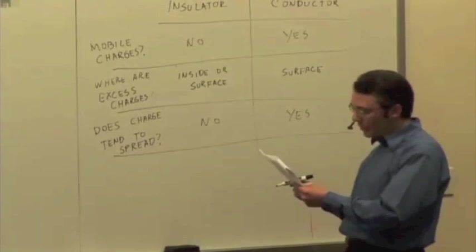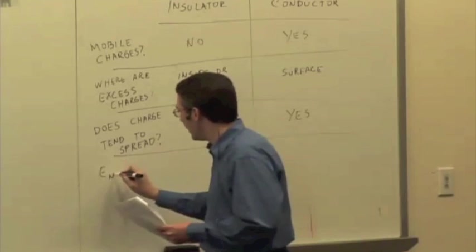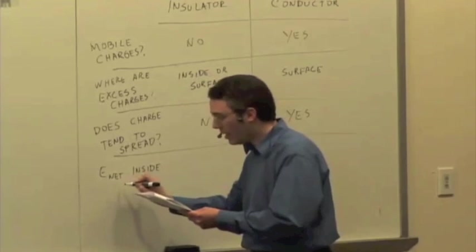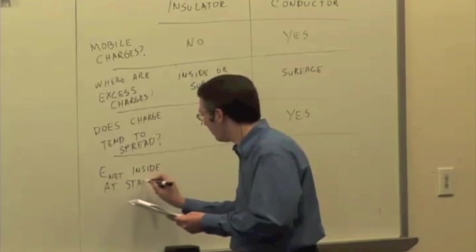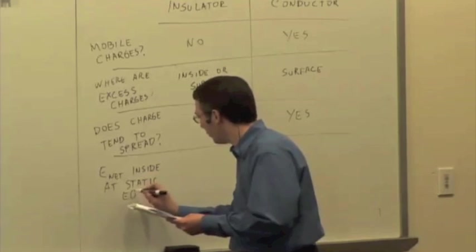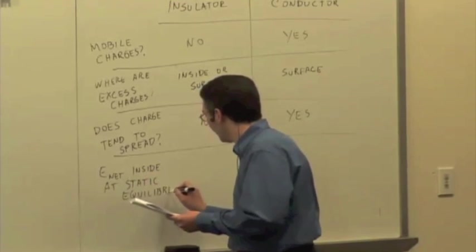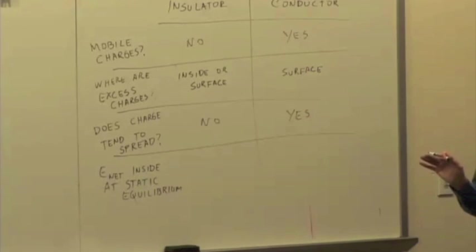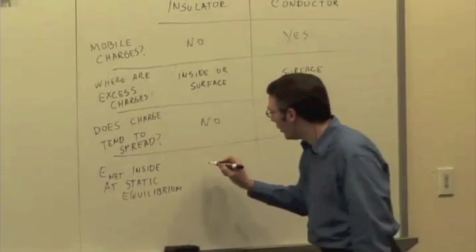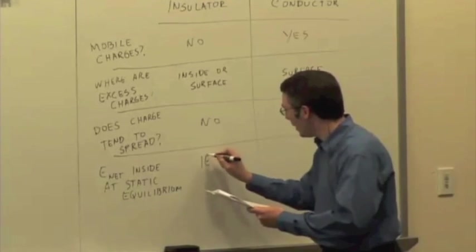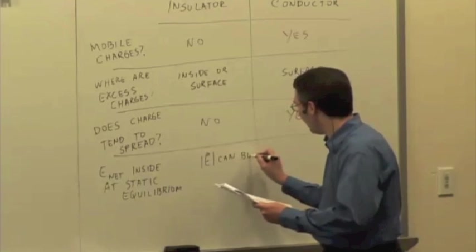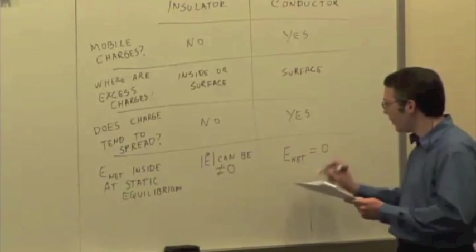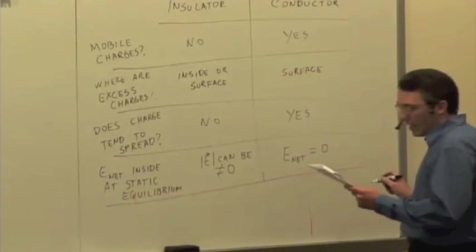E-net inside at static equilibrium. In an insulator, does the net electric field have to be zero at static equilibrium? No. There's nothing that says it has to be. E can be not equal to zero. But in a conductor, E-net is equal to zero. And then lastly, maybe this is a bit more general,